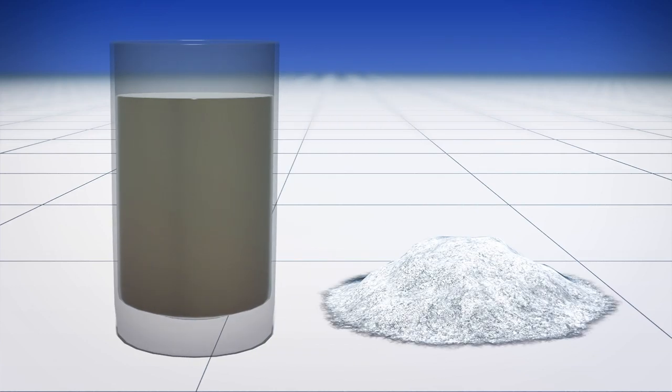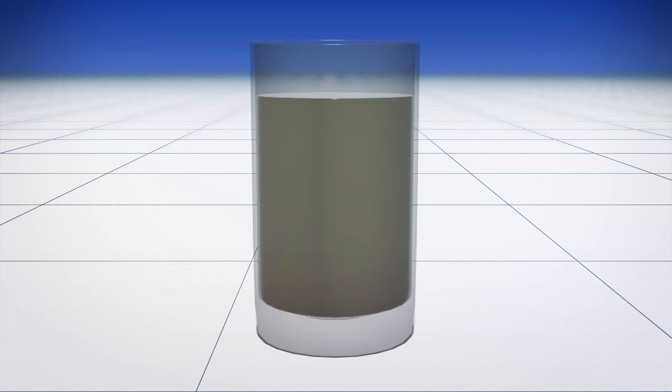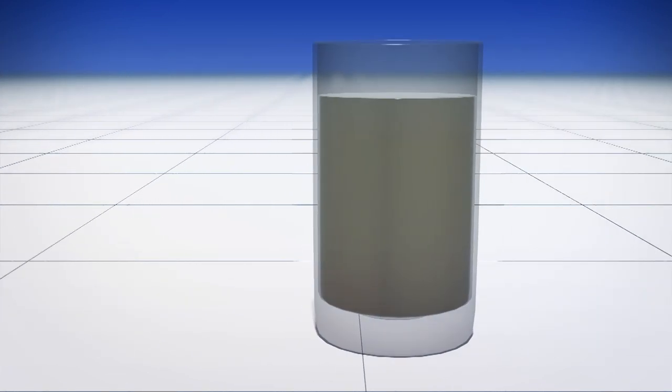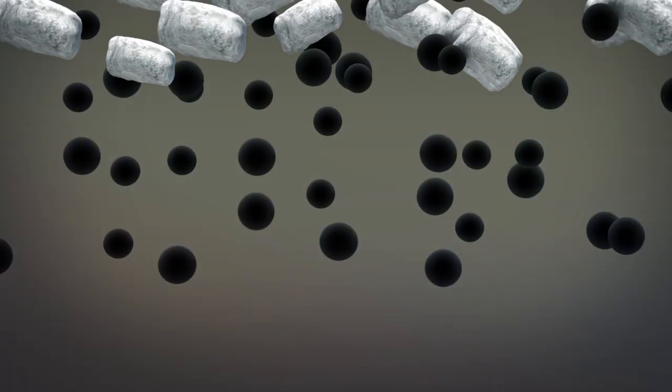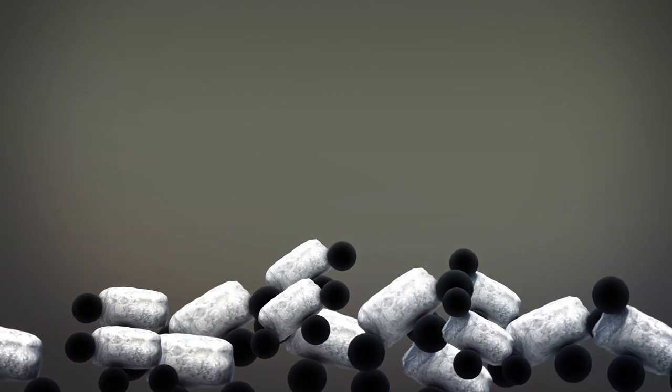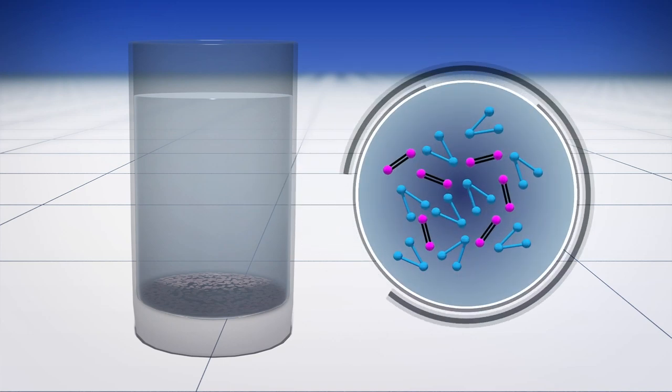Coagulation is a chemical water treatment process that causes colloidal and suspended particles in water to group into formations and settle. But while conventional coagulants like aluminum sulfate remove large particles, they are unable to capture smaller dissolved contaminants.